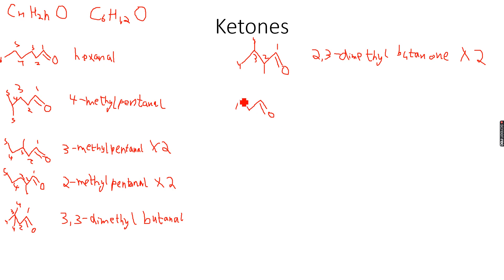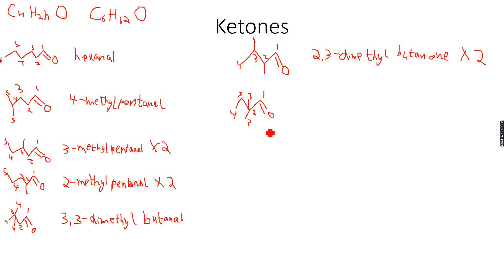Now instead of placing a methyl group separately, I'll place both methyl groups on the same position this time. This gives one, two, three, and four — you can see the longest chain is again four carbon atoms.